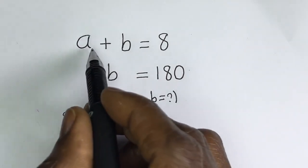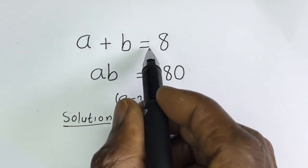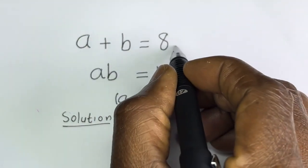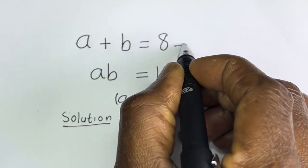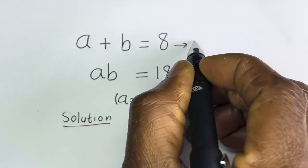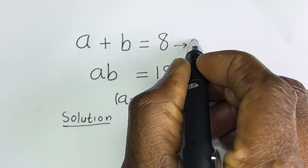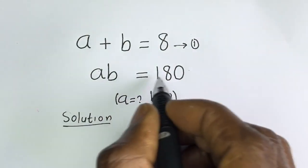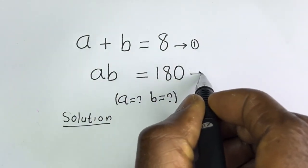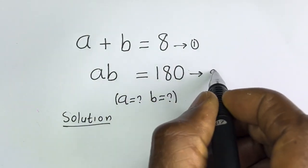Here we have A plus B is equal to 8 — let's call this equation 1. AB is equal to 180 — let's call this equation 2.